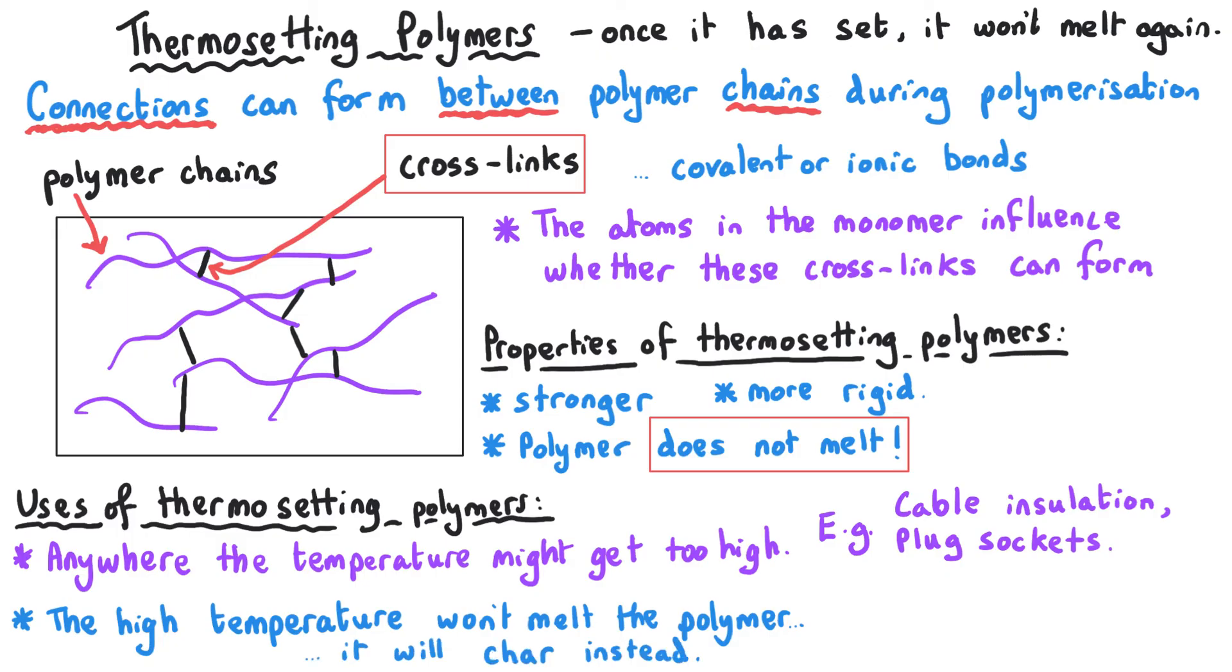What will happen to this type of polymer is it will typically char instead of melting, and so that's sometimes what you see on a plug or a plug socket that has got hot, it goes a bit yellow because the plastic has charred. It's changed colour and perhaps shape slightly.